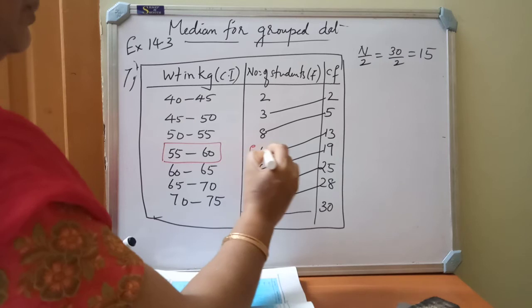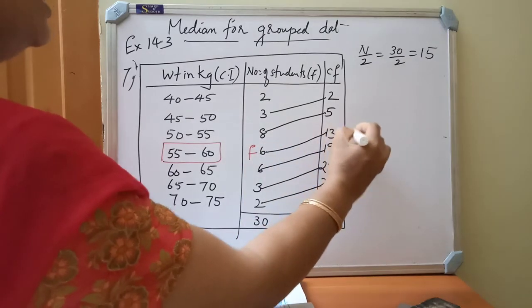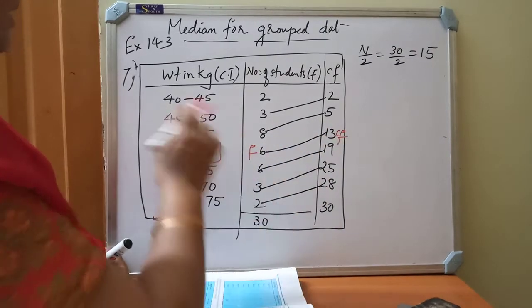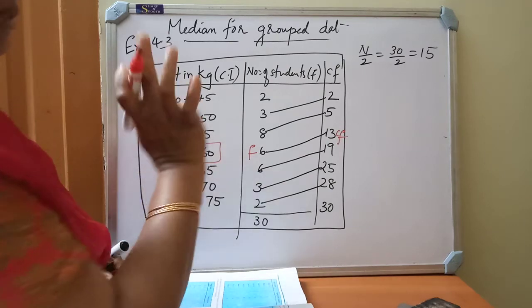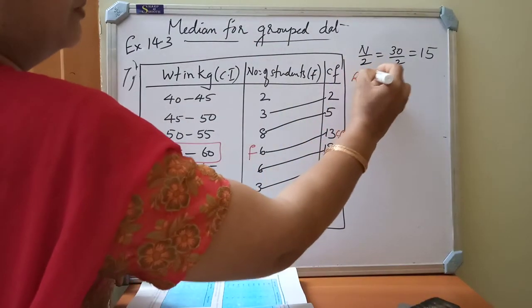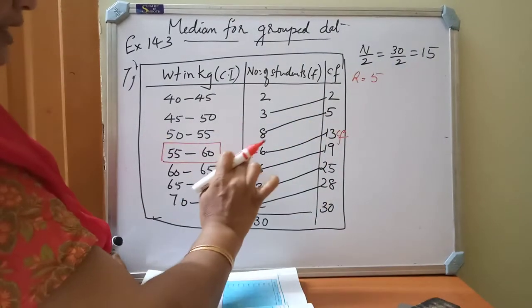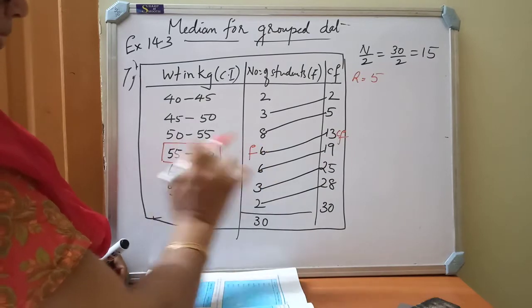This is our F value. 13 is our CF value. What is our H? 45 minus 40, 5. So H is equal to 5. So the other data center I mention in the tabular column itself. That you must substitute it.